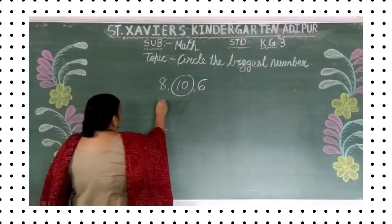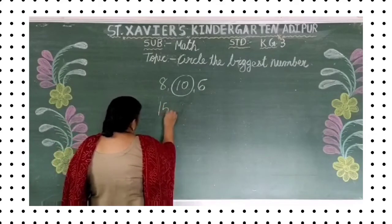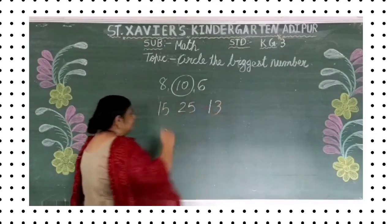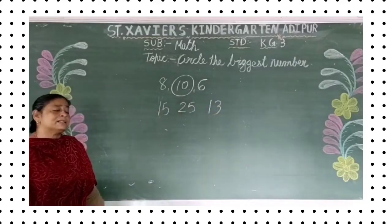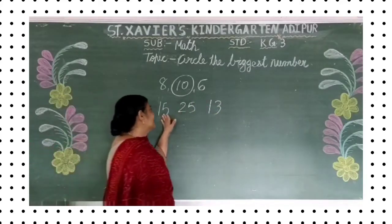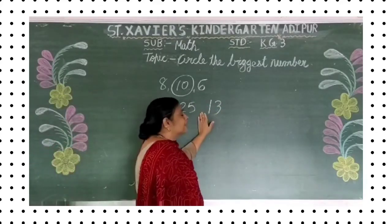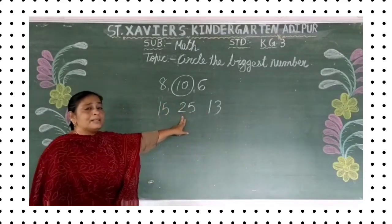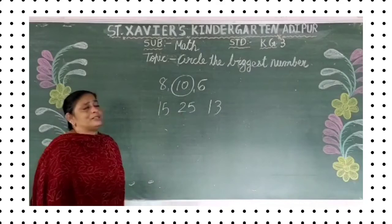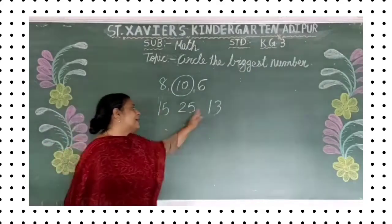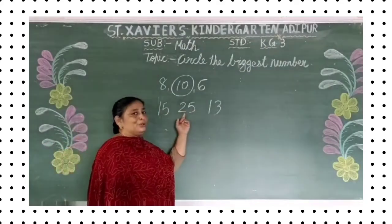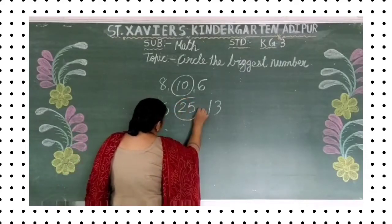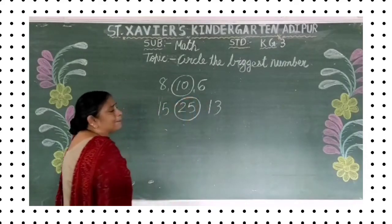Now, number fifteen, twenty-five, thirteen. Now, which one is the biggest? Eleven, twelve, thirteen, fourteen, fifteen. Aur yaan peh kaunsa number diya hai? Twenty-five. Toh one se bada na two — toh which one is the biggest? Yes, then you have to circle the biggest number — twenty-five.